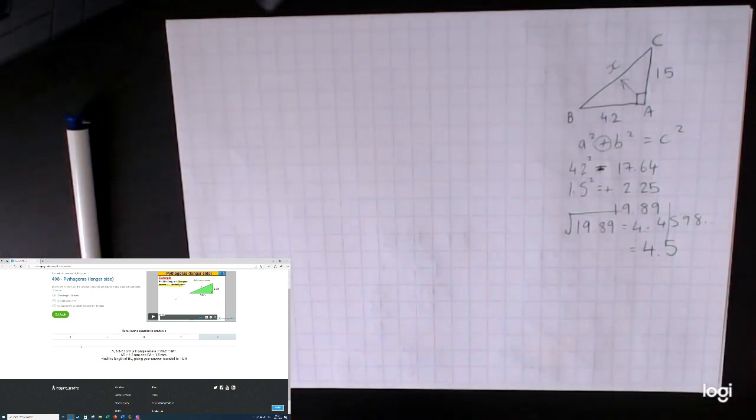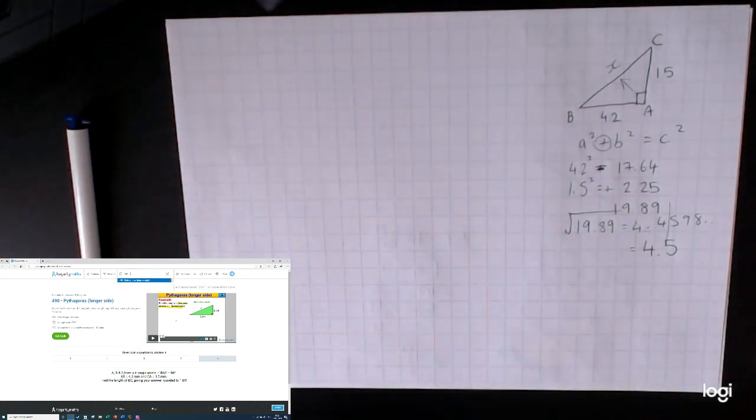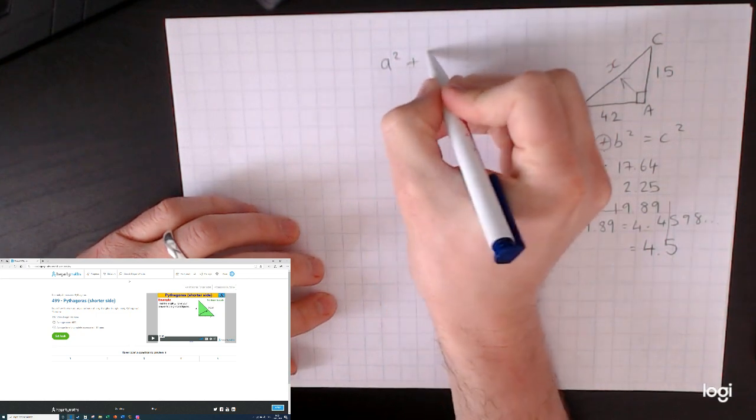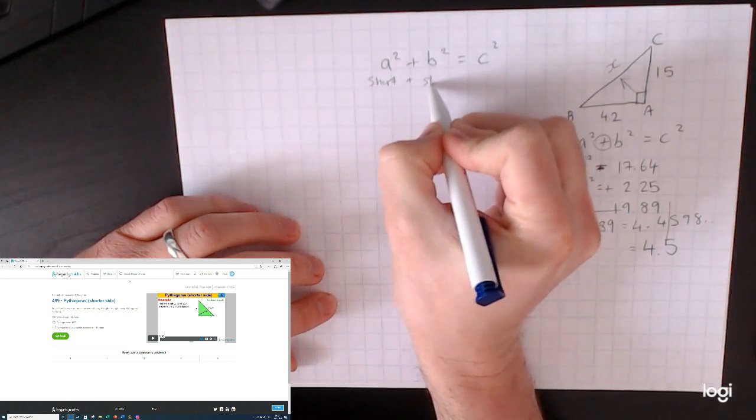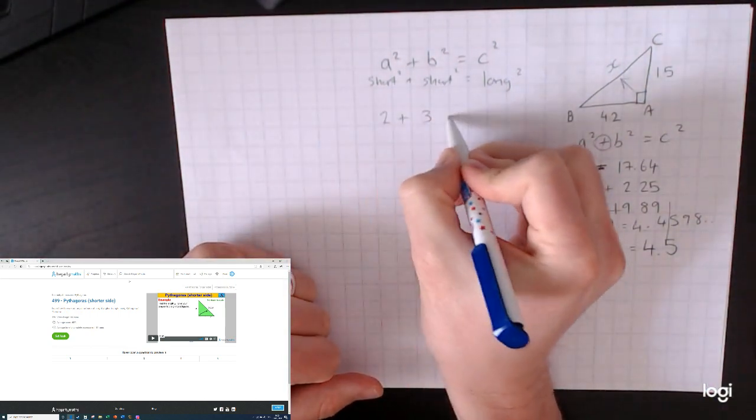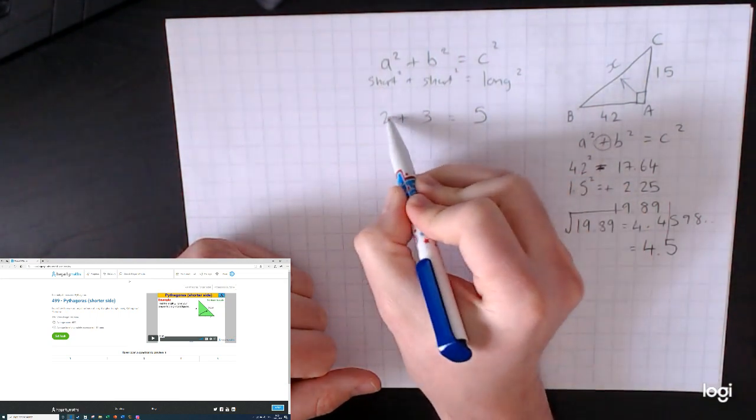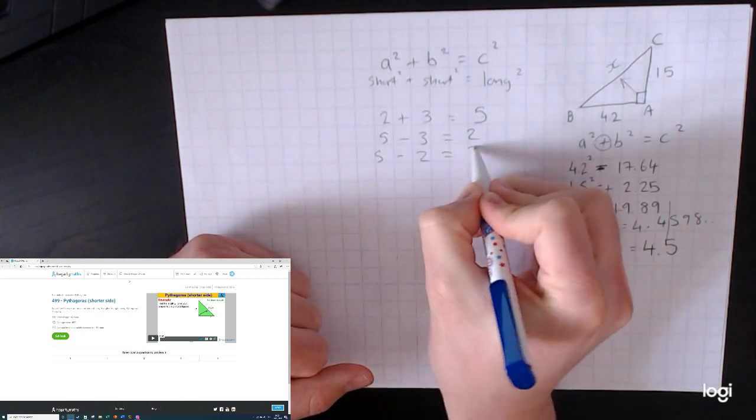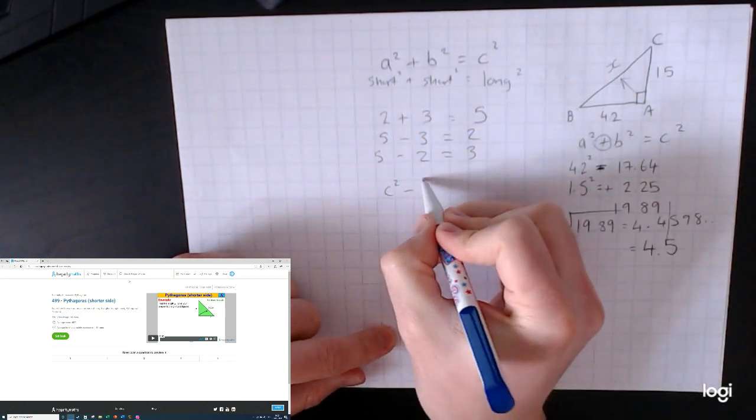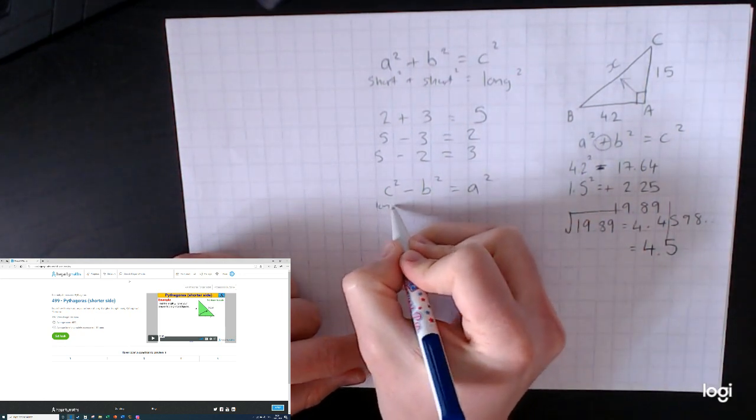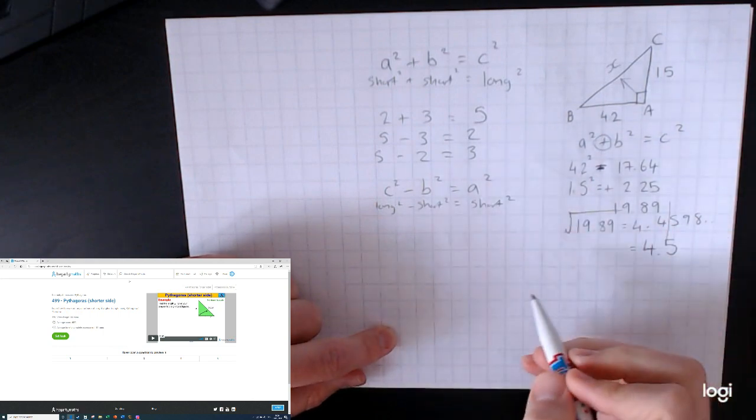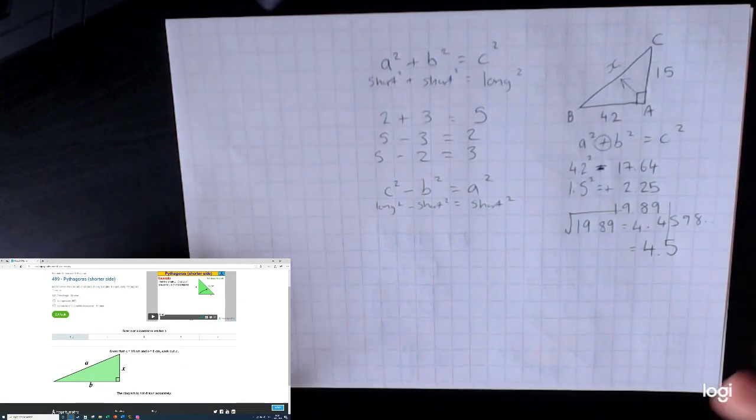So I hope that helps with video 498. I'm going to quickly load up 499 for you, and it's the same thing but with a short side now. If we go back to what we said earlier, a squared plus b squared equals c squared. So short squared plus short squared equals long squared. If I just said 2 add 3 equals 5, which stands to reason that 5 take away 3 equals 2, or 5 take away 2 is 3 and so on. Well it works the exact same here. If a squared add b squared is c squared, then c squared minus b squared equals a squared. In other words, the long side squared minus one short side squared equals the other short side squared.